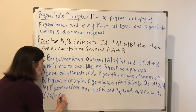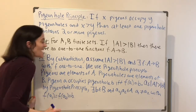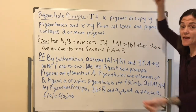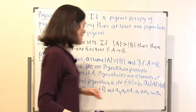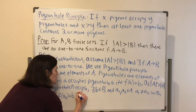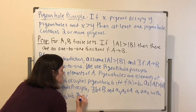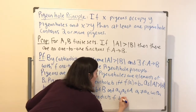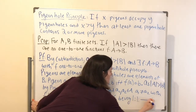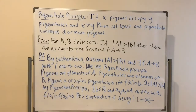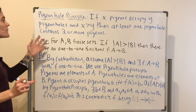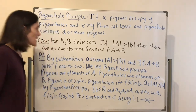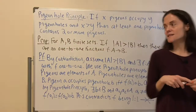We have reached our contradiction: we have two different elements of A mapping to the same element of B, which means F is not one-to-one. This contradicts F being one-to-one. Therefore, we have proved that if the cardinality of A is bigger than the cardinality of B, there are no one-to-one functions from A to B.